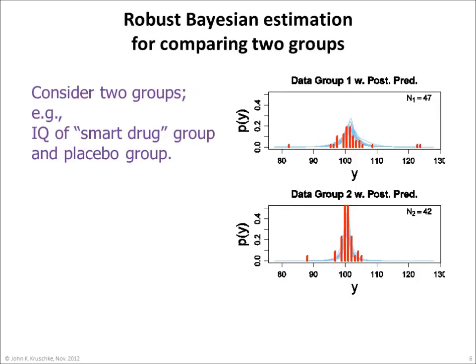As a complete realistic example, I'd like to show you robust Bayesian estimation for comparing two groups. Consider two groups from which we obtain metric data. For example, suppose we measure the IQ scores of some people given a smart drug and from some other people given a placebo. The data are shown by the red histograms. Notice that there are outliers in the data, but as far as we know, these outliers are representative of the groups and therefore should not be omitted.